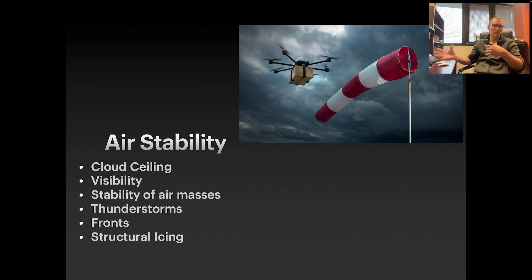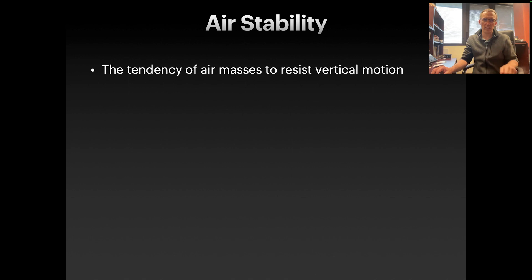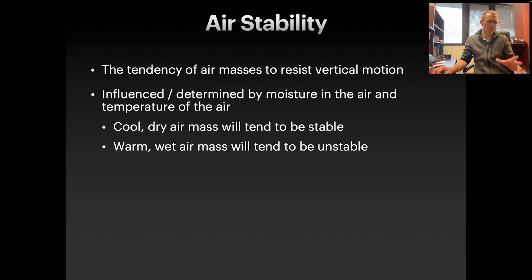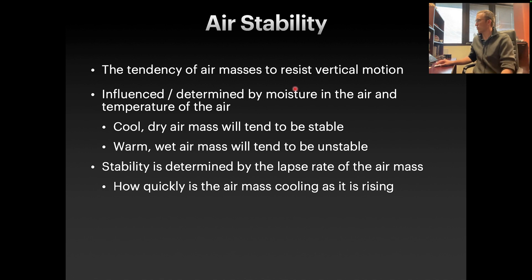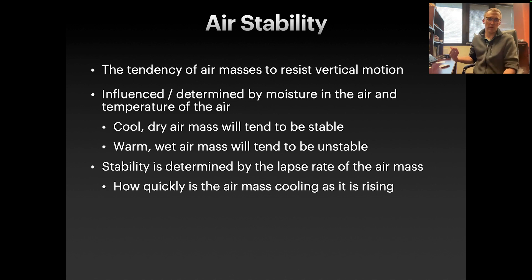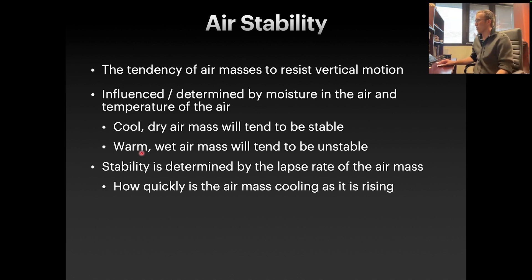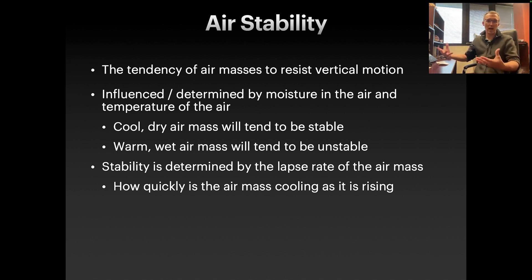Air stability is the tendency of air masses to resist vertical motion. This involves a little bit of physics, but it basically comes down to moisture and temperature in the air. Cool, dry air is going to tend to be stable — no moisture, no energy. Warm and wet air is going to tend to be unstable. High humidity, high temperature means higher energy and instability.